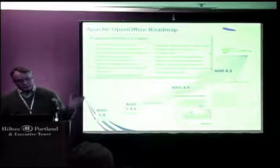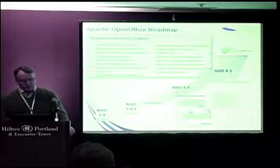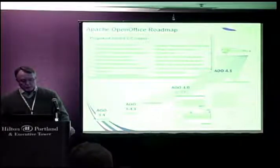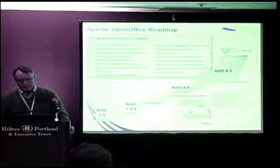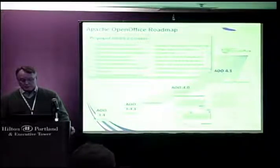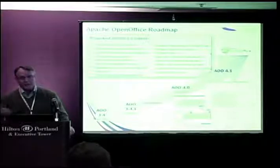How does this look on the chart? Starting in the lower left-hand corner with 3.4 in May 2012, then 3.4.1 in August, then graduation. For 4.0 we're targeting now May-June — it looks like an RC in May and then several RCs before we get to a release candidate that will be the formal ship in June. 4.1 we think will be six months later, so end of 2013.